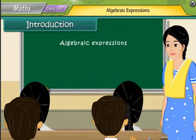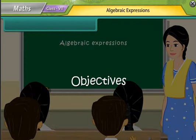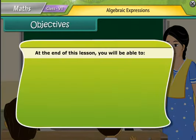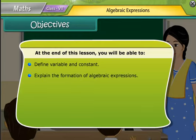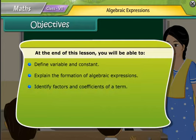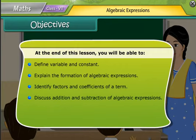So let us start. Lesson objectives: At the end of this lesson you will be able to define variable and constant, explain the formation of algebraic expressions, identify factors and coefficients of a term, discuss addition and subtraction of algebraic expressions, and find the value of an expression.